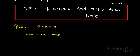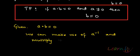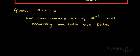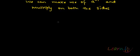We can make use of a^(-1) and multiply on both the sides, because this is one operation that we know is accessible in this field. This is one operation that we can use.